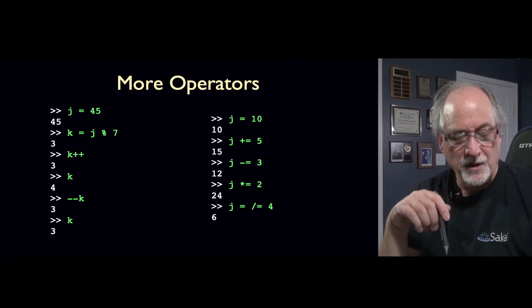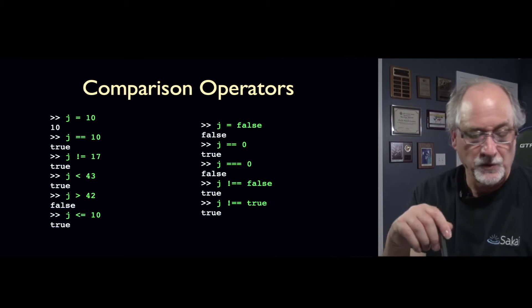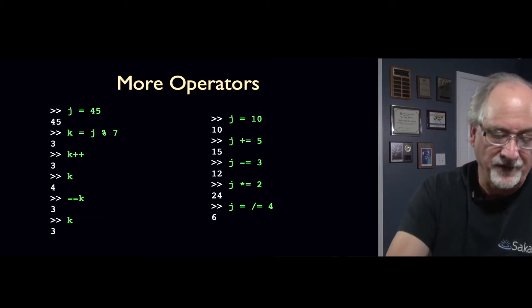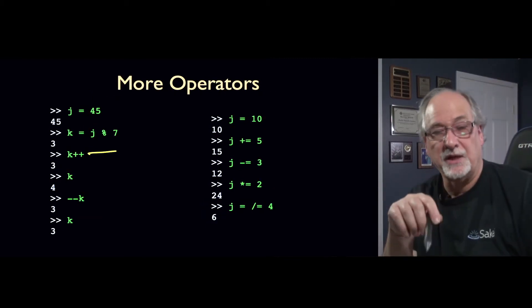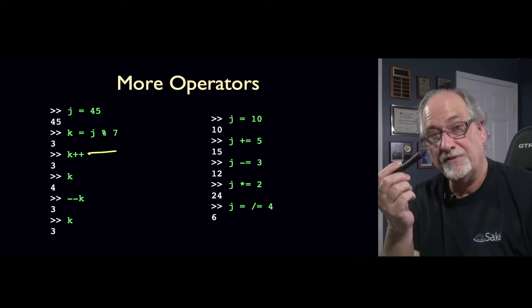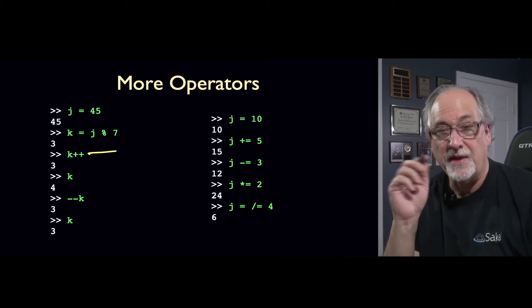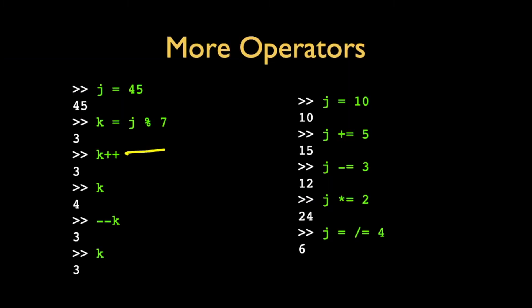There are side effect operators. K plus plus says, retrieve K, have it be part of an expression perhaps, and then add one to it and store it back down. So, if I say K plus plus, it says 3. But then afterwards, K has become 4. So, after it retrieved the K and printed it, then it turned it into 4. These are, there's a very few places that we actually use these. And then we use them all the time. But in general, you can hurt yourself if you write too much of this stuff.